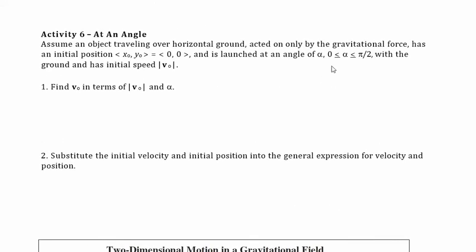To use these formulas we need to know the initial velocity and the initial position. So given the angle and initial position at zero, how could we find the initial velocity? First, let's draw a picture of this situation and then see if we can derive or modify the formulas we have. Our initial position is at (0, 0) and the object is acted on only by gravity.